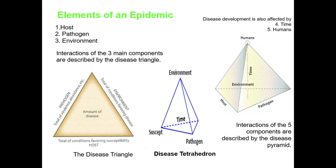Humans are involved in intervention practices which are important for the control of the disease. Below you can see the disease triangle, which we have discussed before, and the disease tetrahedron, where time is added as well. If we then add the human factor to the tetrahedron, this leads to the interactions of five components, which are described in the disease pyramid.